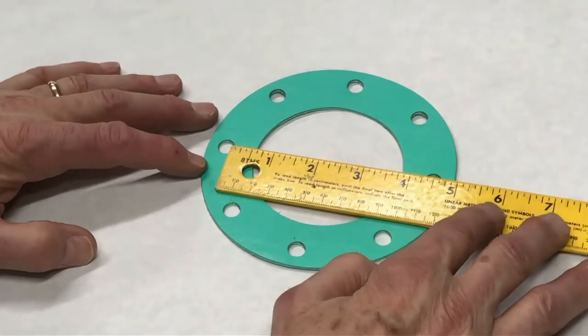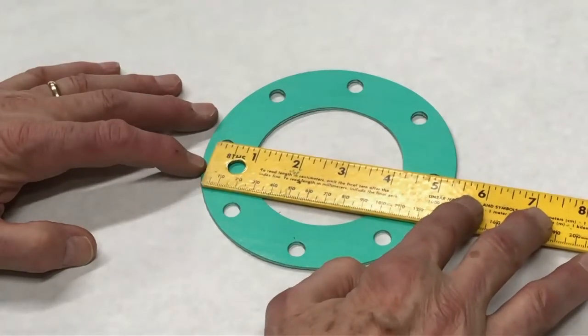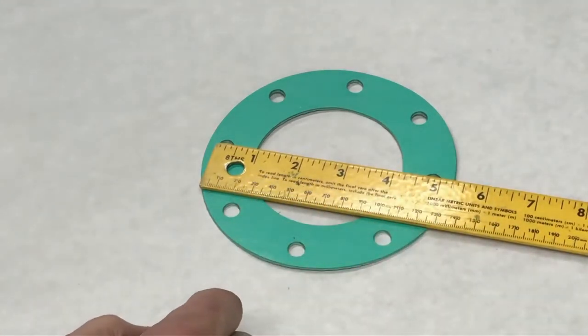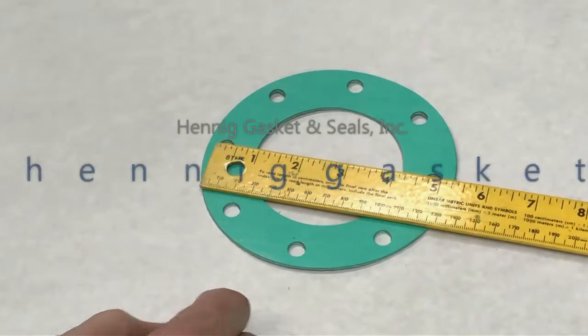We can get the same dimension if we go from the left side to the left side, four and five-eighths inches. And then we've got the correct measurements for a full-face gasket.